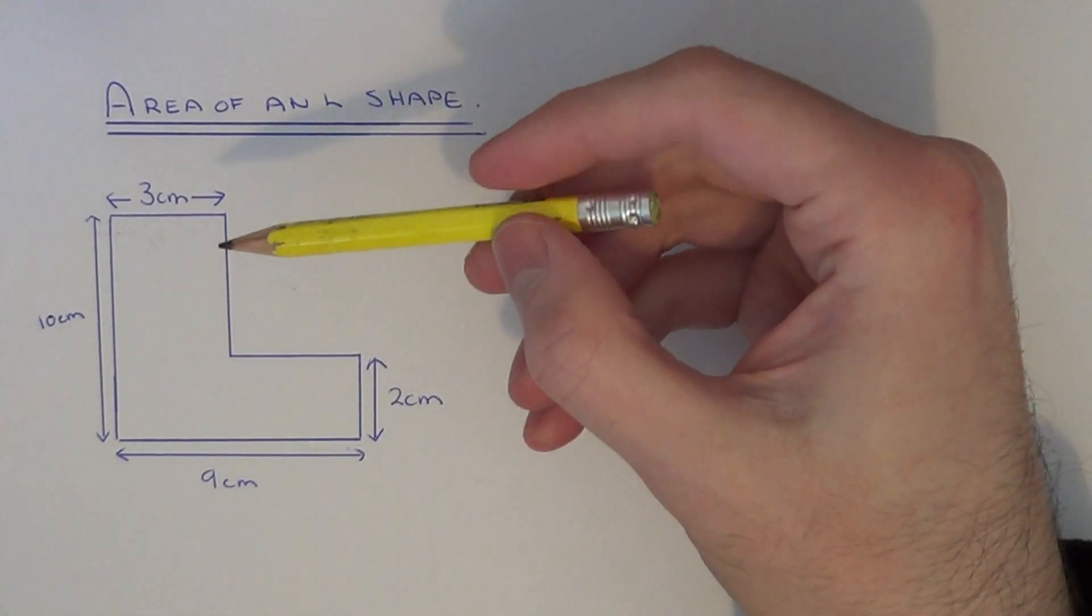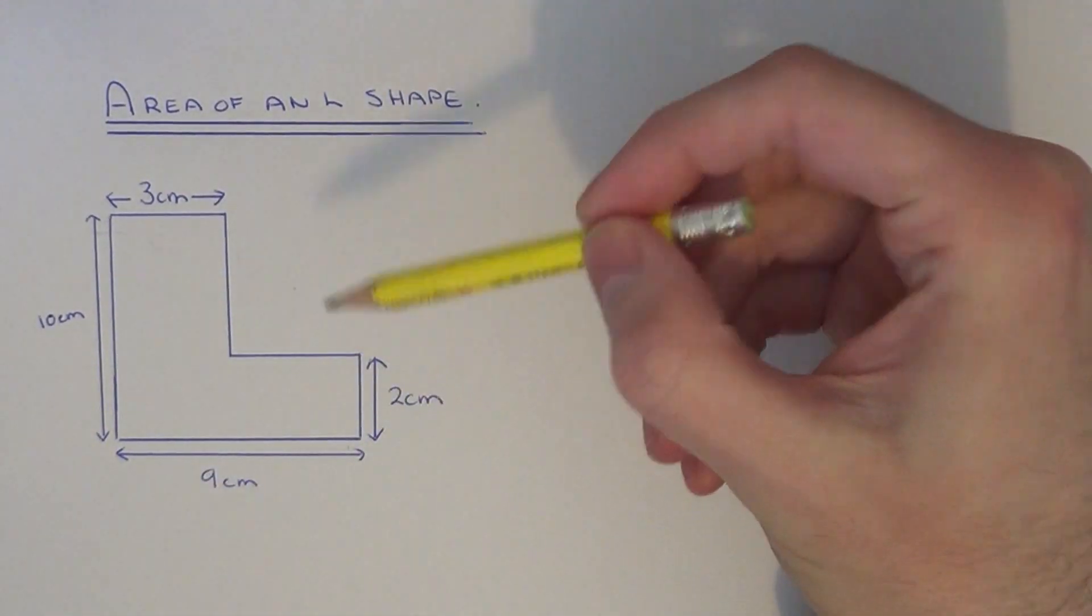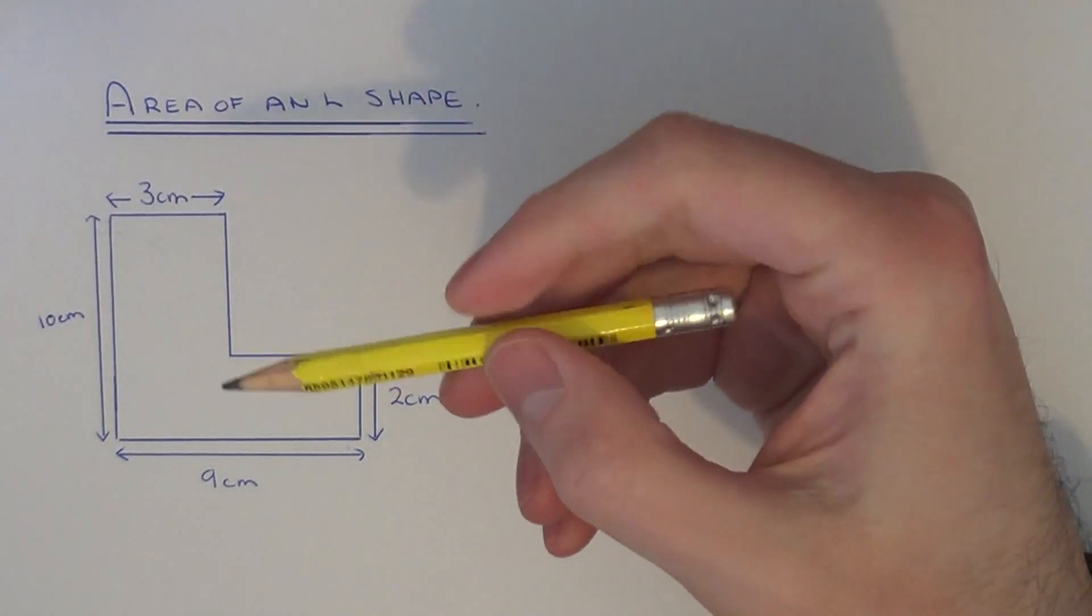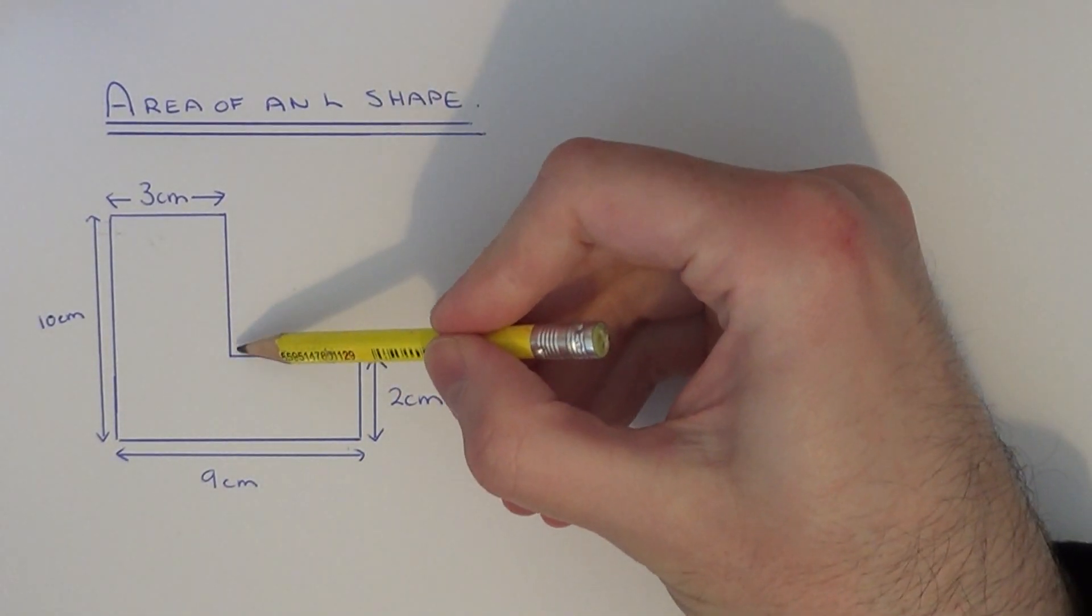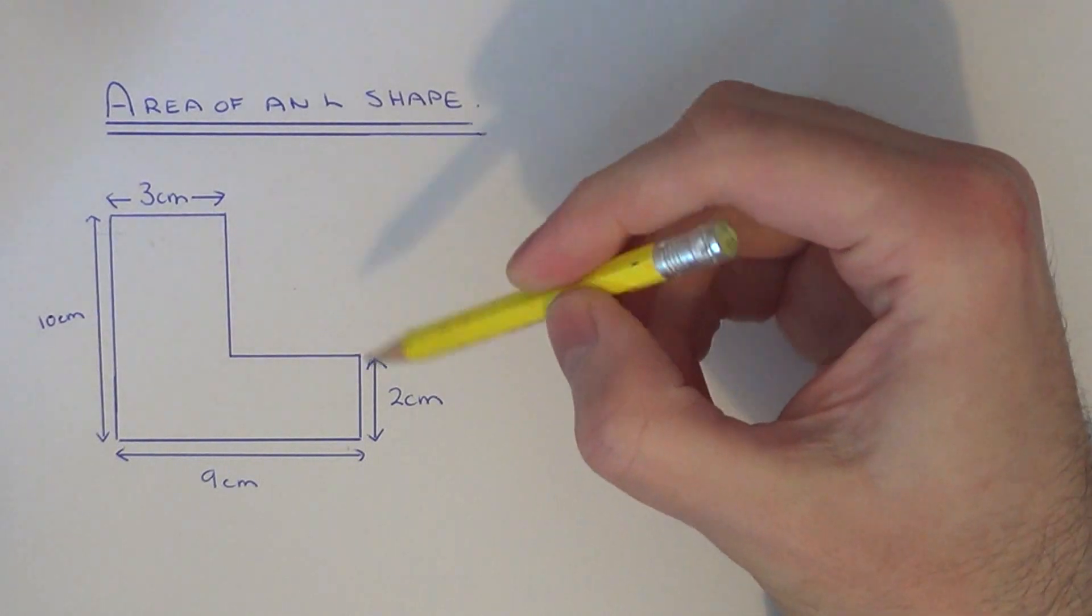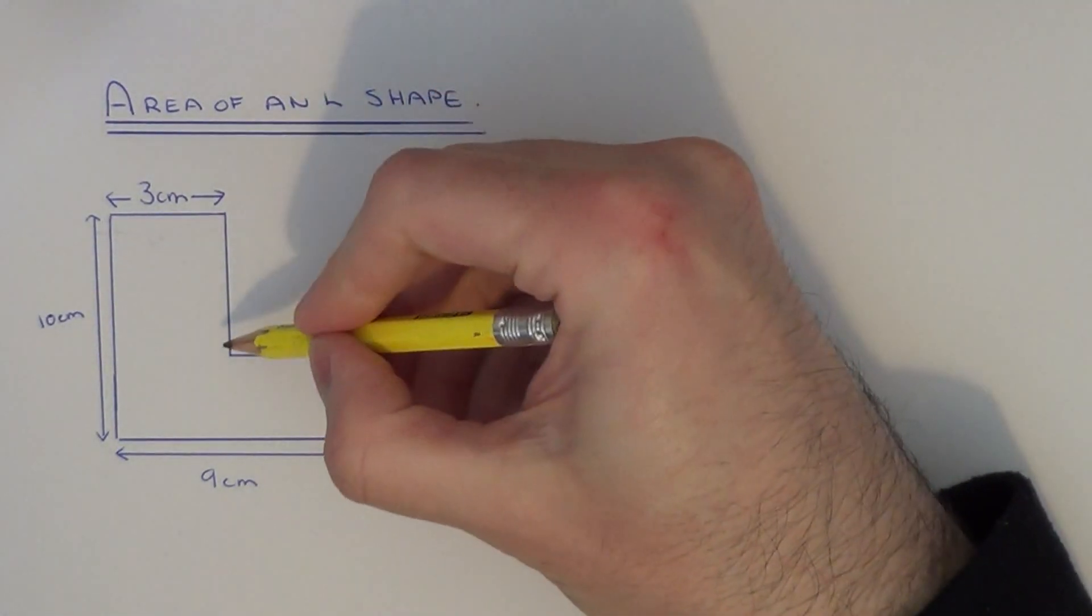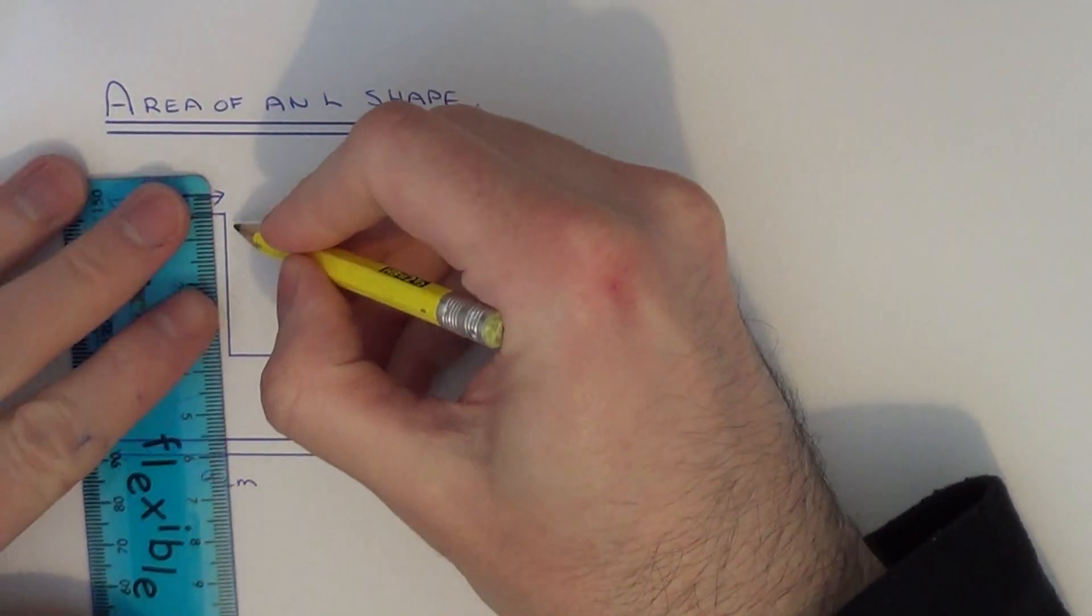In this example we need to calculate the area of this L shape. A good idea before you start is to work out the two sides which are missing. So first of all let me work out this side length.